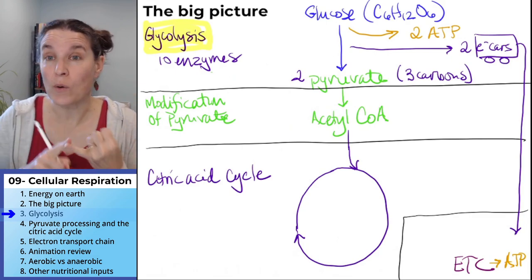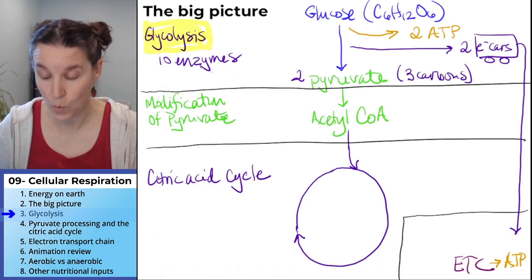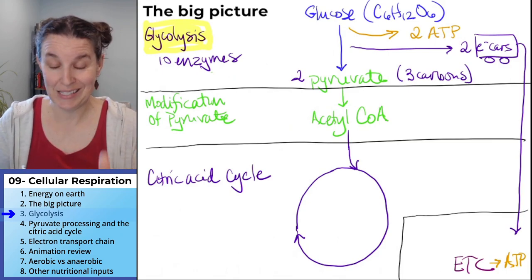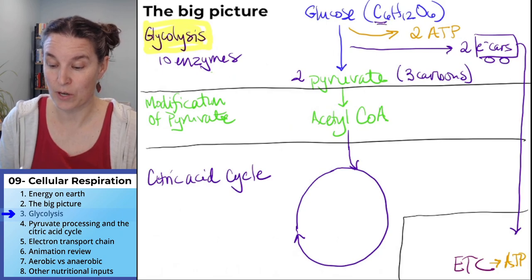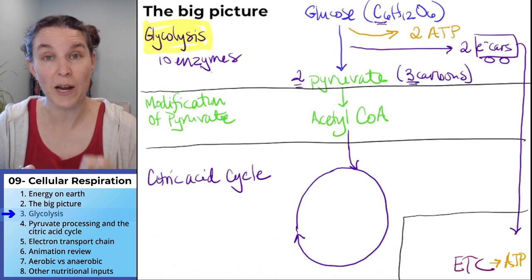That's it. We don't get any water out of this. We don't get any carbon dioxide. Which, if you had to guess, could you have figured that out? Because we had six carbons going in in glucose and six carbons coming out because we get two pyruvate molecules.